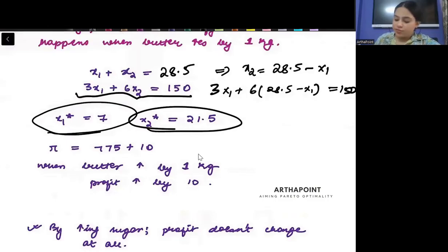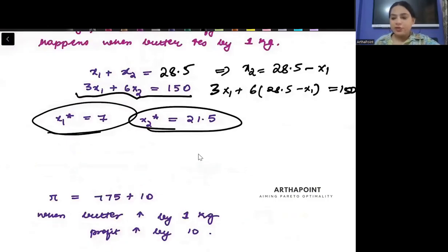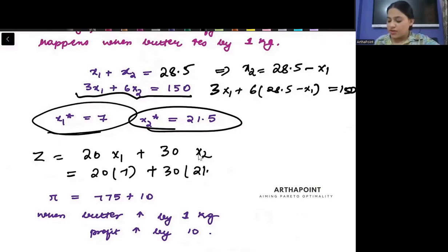Then, beta, you will try to find the profit. When you try to find the profit, it was 20x1 plus 30x2. So, it will be 20 into 7 plus 30 into 21.5. When you go ahead and find this value, you will get the answer as 7.85.